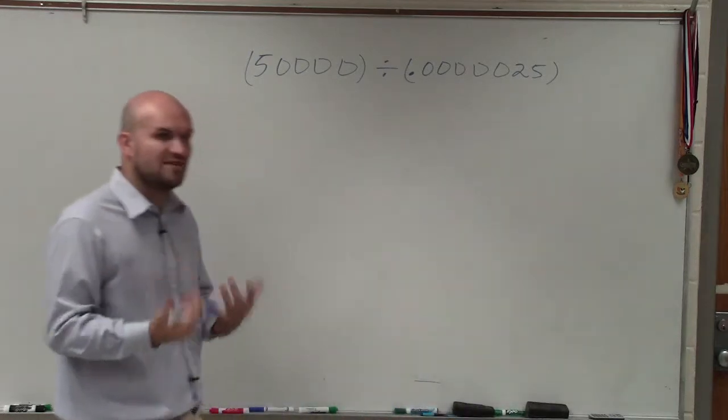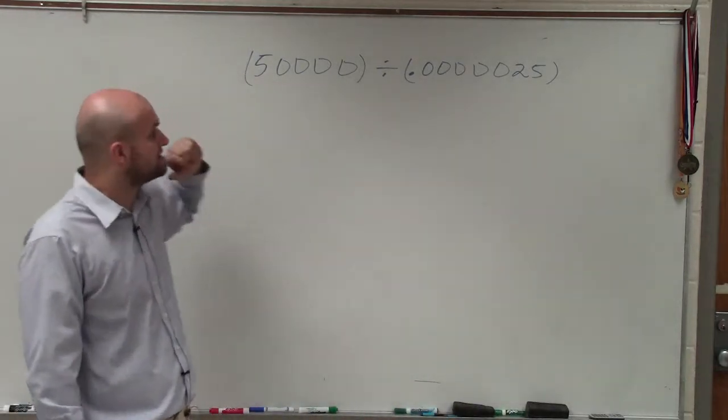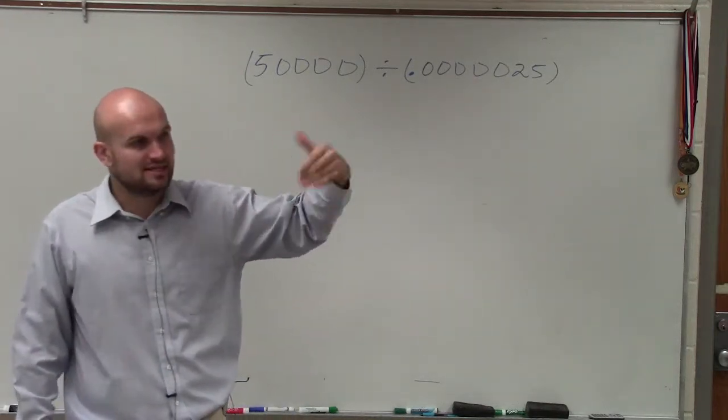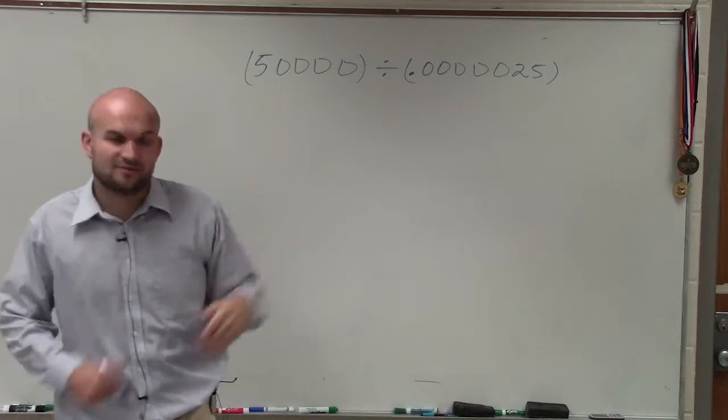First thing, when we're dividing, we have 50,000 divided by 0.000025. To make this the easiest operation possible, let's rewrite it in scientific notation.